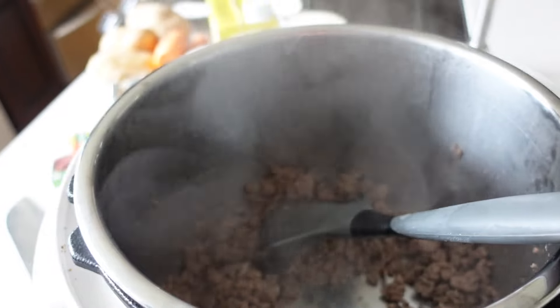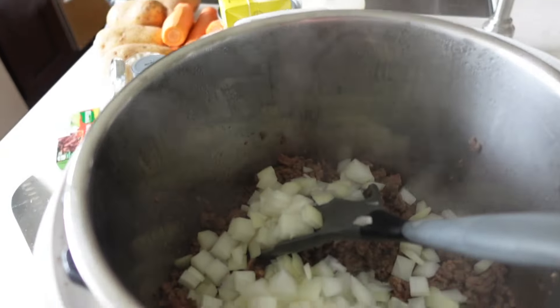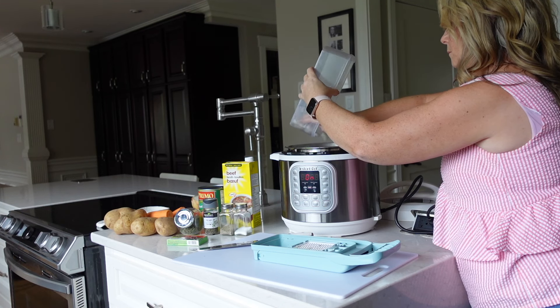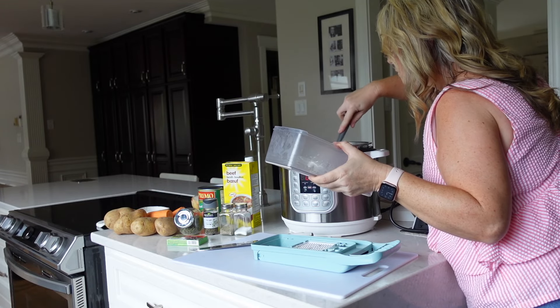And when the ground beef is almost cooked you're going to add your diced onion to it and let it just simmer a little bit more until the ground beef is totally cooked and the onion is a little bit more translucent.